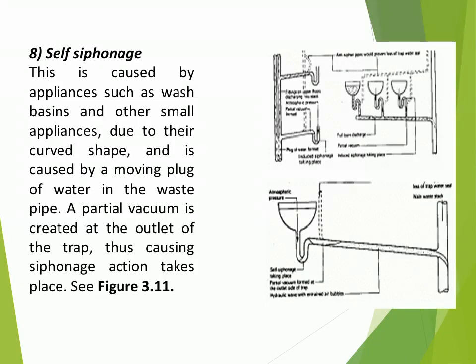Self-Siphonage: this is caused by appliances such as wash basins and other small appliances, due to their curved shape, and is caused by a moving plug of water in the waste pipe. A partial vacuum is created at the outlet of the trap, thus causing siphonage action to take place. See figure 3.11.